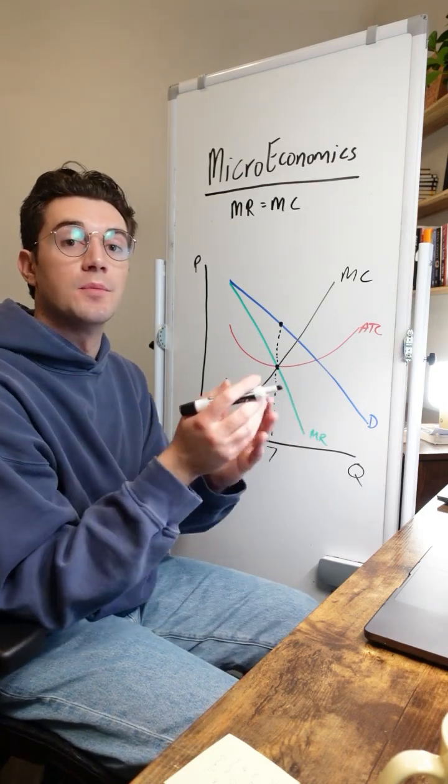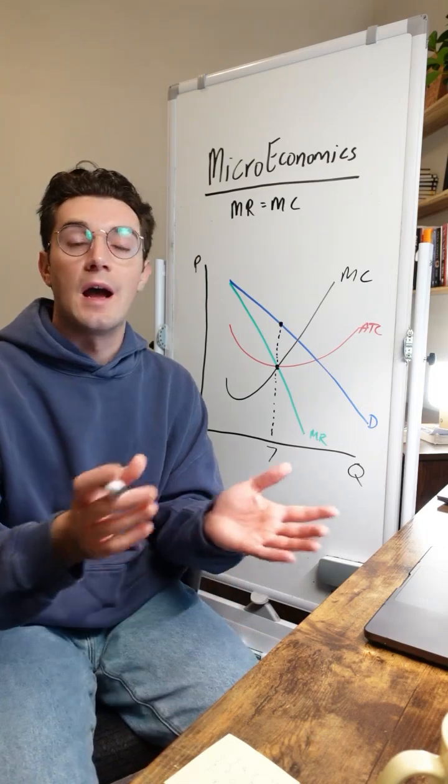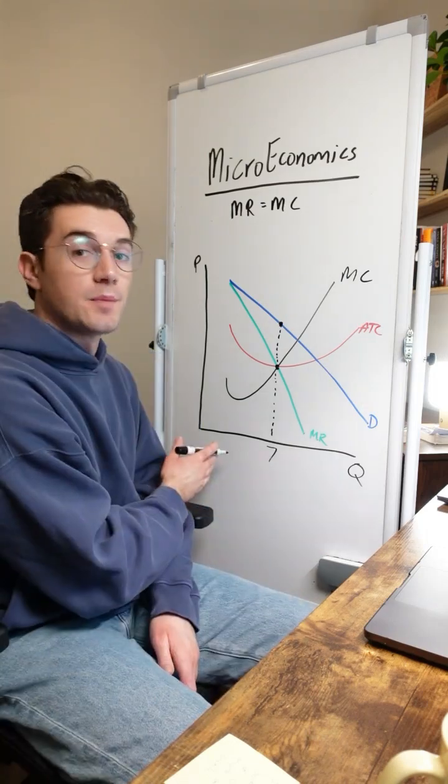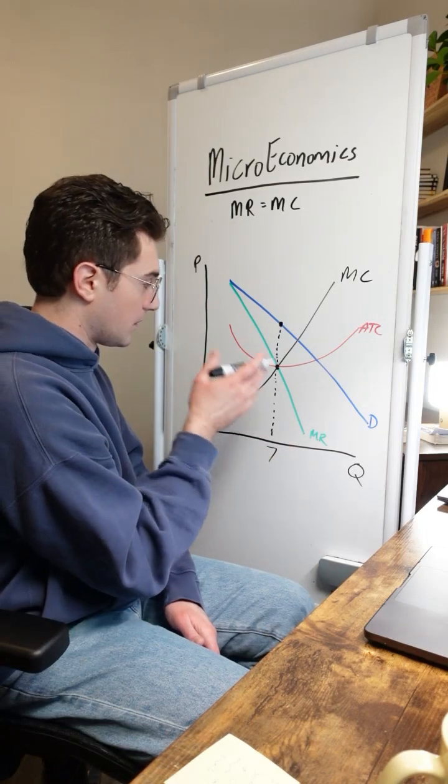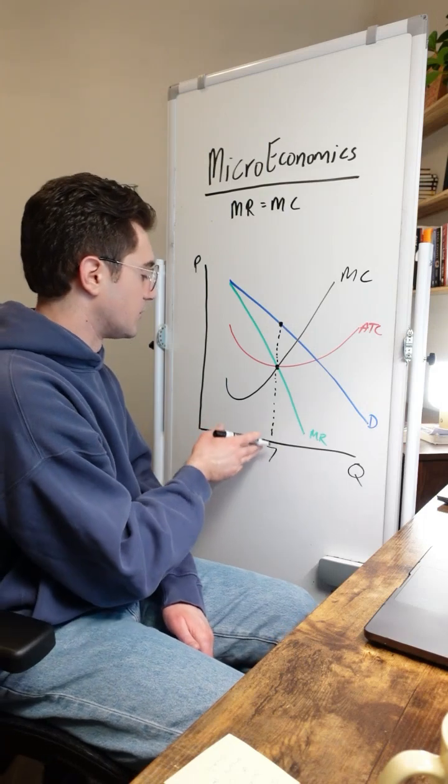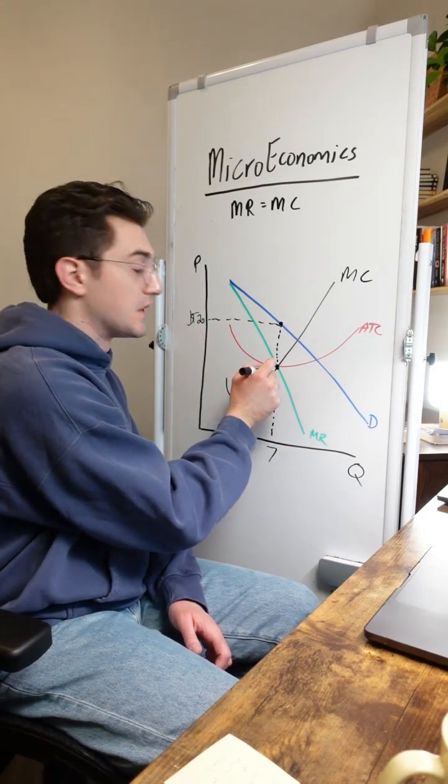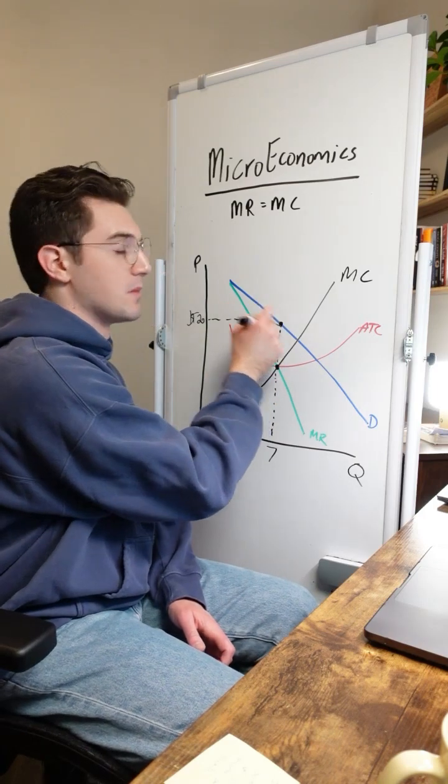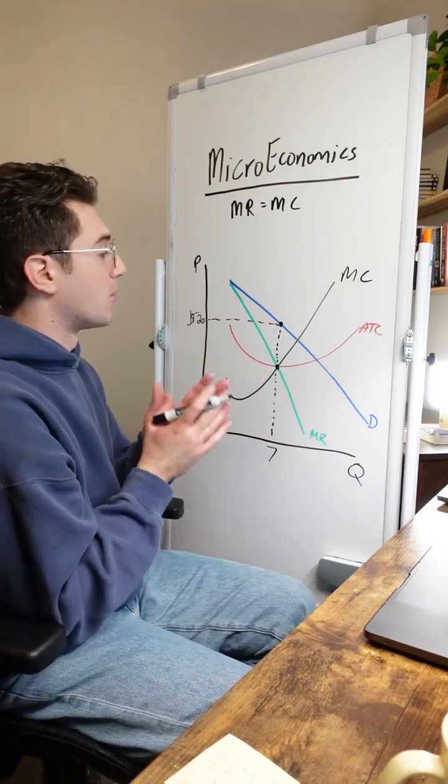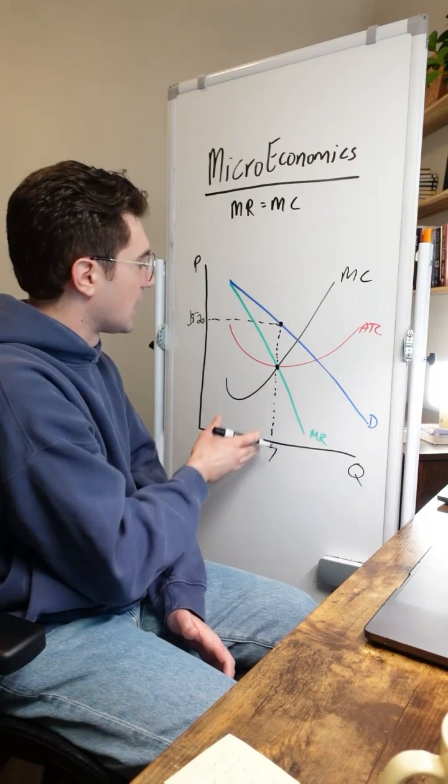Don't just stop at the marginal revenue. That's just the additional revenue per unit. The demand curve is really the source of truth for how much consumers will pay for the good, dependent on how many units are being sold. So this firm profit maximizing is going to produce seven units at a price that we'll call it 20 bucks. Always make sure after you pinpoint the MR equals MC point to go up to the demand curve. If we wanted to see what profit looks like here,